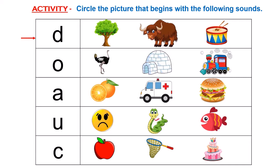Look at the pictures in front of Duh. The first picture is that of a tree. Then is Yak. And the last picture is that of a drum. Can you tell me, children, which picture begins with the sound Duh? Is it tree, yak, or drum? Very good. Drum begins with the sound Duh.